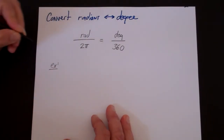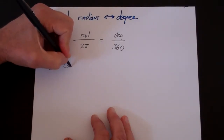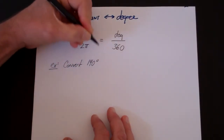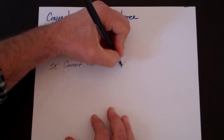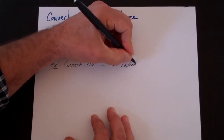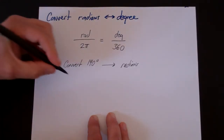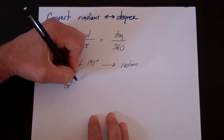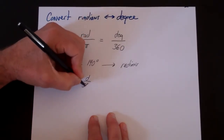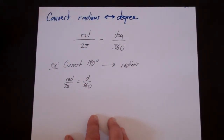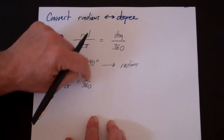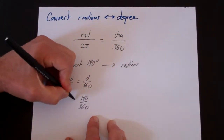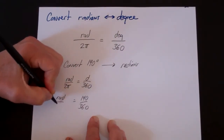Let's do an example and then you can do some examples. Let's convert 140 degrees to radians. Your first step is to write the formula: radians over 2 pi is equal to degrees over 360. Then plug in what you know — degrees is 140 — so you have 140 over 360 equals radians over 2 pi.